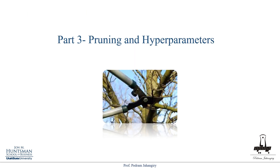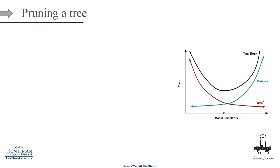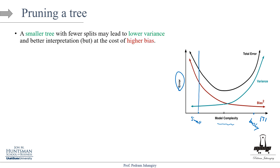Part three: how to prune a decision tree, and what are the hyperparameters? To understand pruning, consider plotting error rates versus model complexity (measured by number of terminal nodes). More terminal nodes means a bushier, more complex tree. A smaller tree with fewer splits may lead to lower variance and better interpretability — for example, a tree with only three terminal nodes is perfectly interpretable.